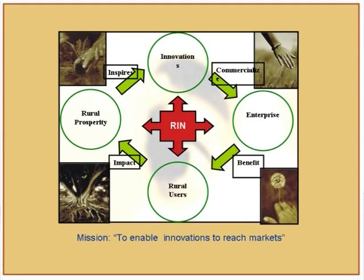Rural Innovations Network believes there are many innovators who come up with solutions to problems rural India faces daily. The way forward is to commercialize them and take them to places across rural India. Commercializing causes rural prosperity and inspires further innovation — that virtuous cycle is what RIN tries to kick start. Jeffrey Sachs in his book 'End of Poverty' notes that 75% of economic development is driven by new technologies, and many countries remain in poverty due to lack of local innovation.